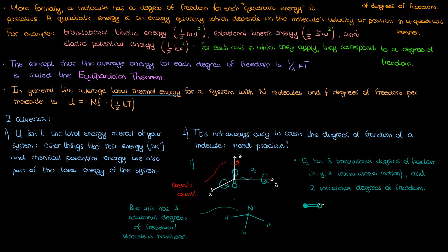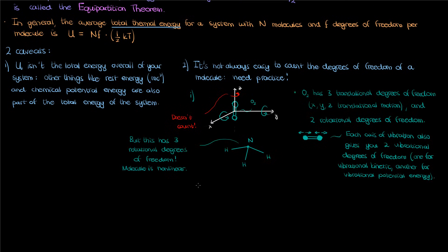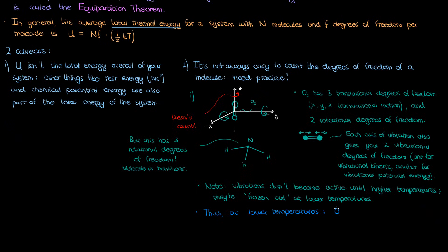You can also have the oxygen atoms get closer and further from each other as though they're vibrating. Now the oxygen atoms can only vibrate along one axis, but each axis of vibration corresponds to two degrees of freedom. One degree of freedom for vibrational kinetic energy and another for vibrational potential energy. Bear in mind though that vibrations don't become active until you reach higher temperatures. They're frozen out at lower temperatures. So at lower temperatures your oxygen molecule is going to have three plus two, so five degrees of freedom, but at higher temperatures the vibrations get added on, so now you have seven degrees of freedom.